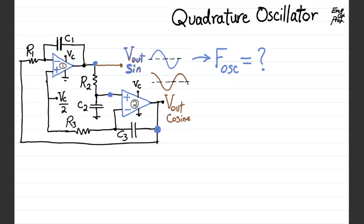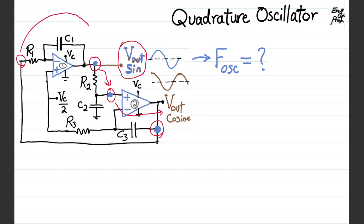Now I'm going to focus on the loop gain in this system for stable oscillation. There are two outputs — Vout sine and Vout cosine — with a 90-degree phase shift between them. If the oscillation is stable, the frequency of oscillation is the same for both. Starting from Vout sine, we go to the positive input terminal of op-amp 2, then to Vout cosine, and then back to Vout sine.